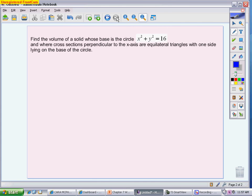One of the ones we talked about in class, a very common one, is when the base of your region is circular. So we have one that is a circle x squared plus y squared equals 16. You should know what that circle looks like. You should understand that that circle is centered at 0, 0, and has a radius of 4.